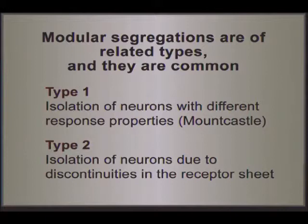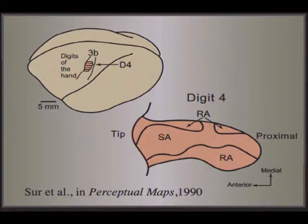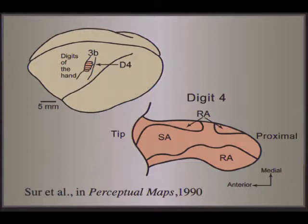Groups of these columns form a module, and then modules go together to form a domain. The other type of module involves isolation of neurons due to discontinuities in the receptor sheet. Here's the classic module, done by Murray Grajski when he was a graduate student with me. Looking at the map of somatosensory cortex, there's a hand representation in primary somatosensory cortex of monkeys with a region for each digit. Within each digit, there are regions where neurons in layer four are responding to rapidly adapting or slowly adapting inputs from the periphery.